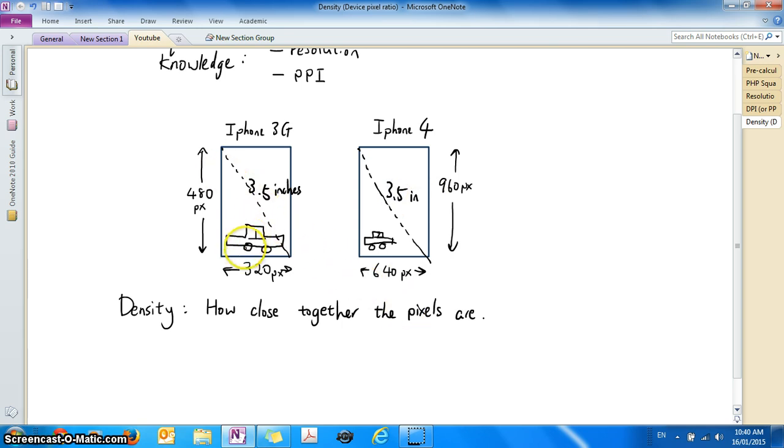So obviously for the iPhone 4 the pixels are a lot closer together so that you can fit 640 pixels. So therefore if we give iPhone 3G a density value of 1 for the iPhone 3G. Then the iPhone 4 will have a density value of 2.